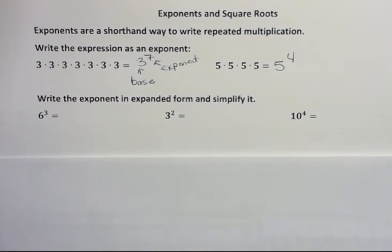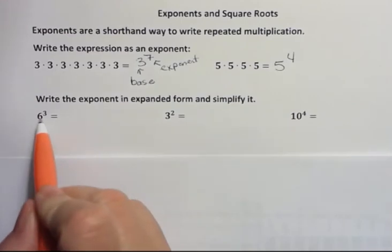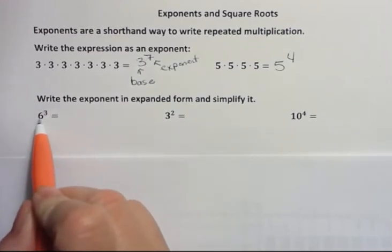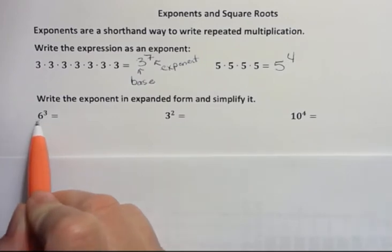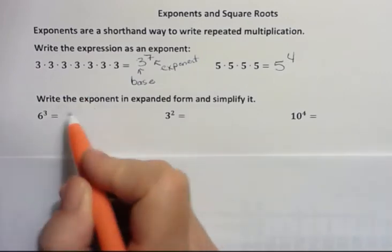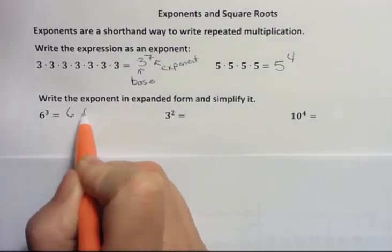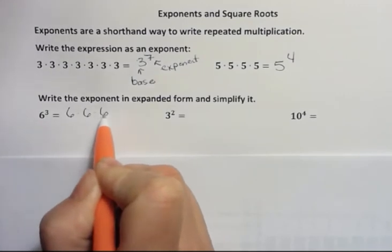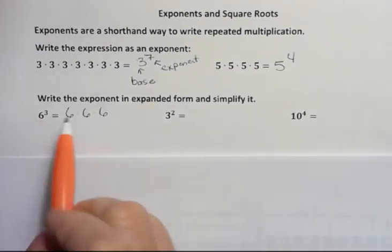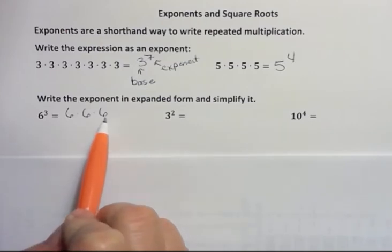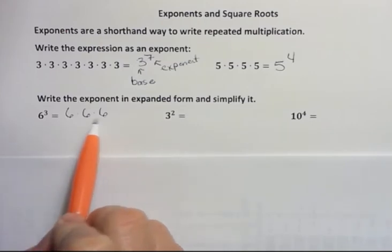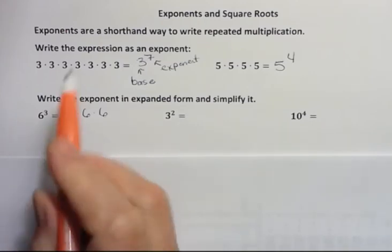I'm asking you to write the exponent in expanded form and simplify it. Expanded form of 6 to the third power: that 3 tells us that it's repeating 3 times and the 6 tells us what is repeating 3 times. So that's 6 times 6 times 6. 6 times 6 is 36, times 6 is 216. So that's not the same as 6 times 3.